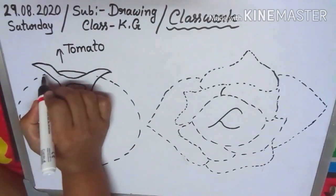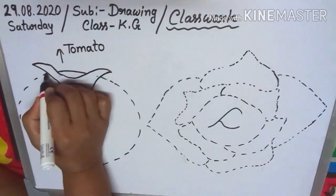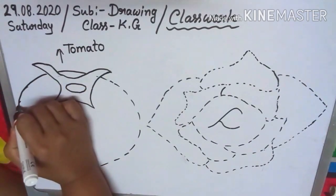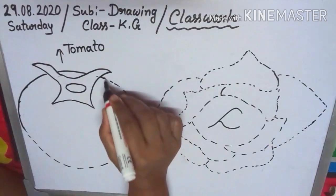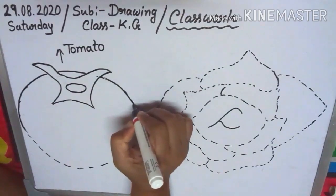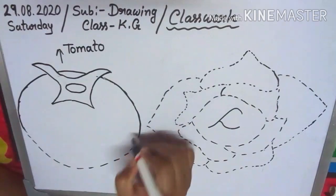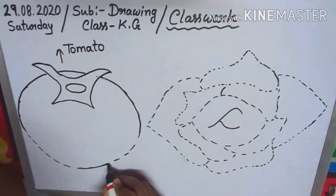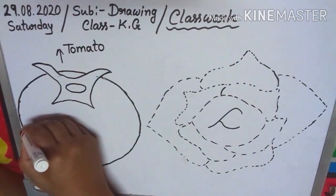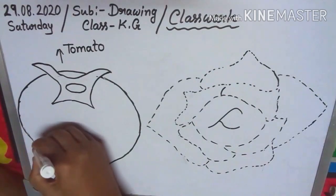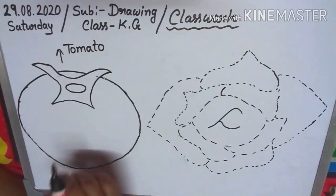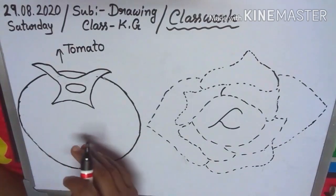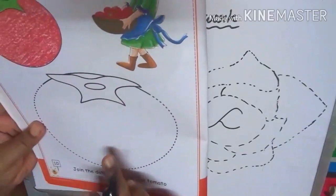First join the dots. Children, everyone, first join the dots. So the color — you know the color is red. So you put the color — red color.